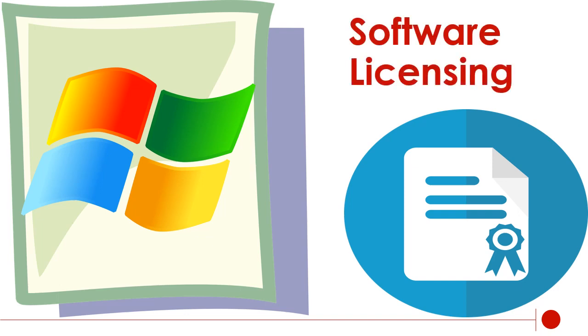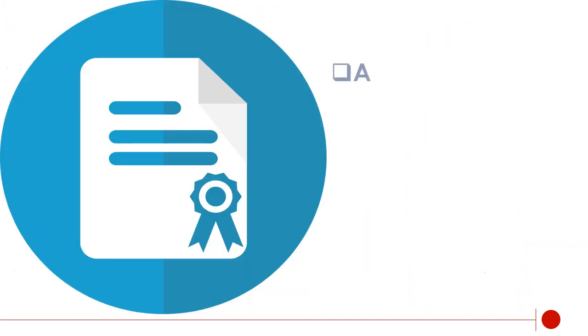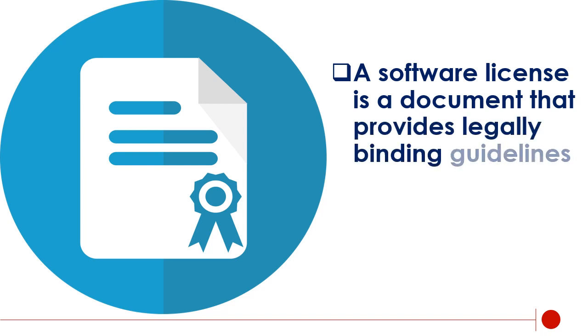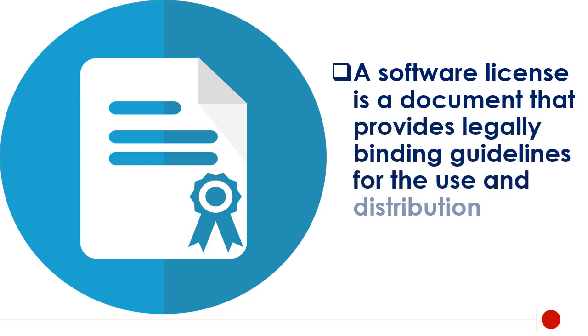Software licensing. A software license is a document that provides legally binding guidelines for the use and distribution of software.